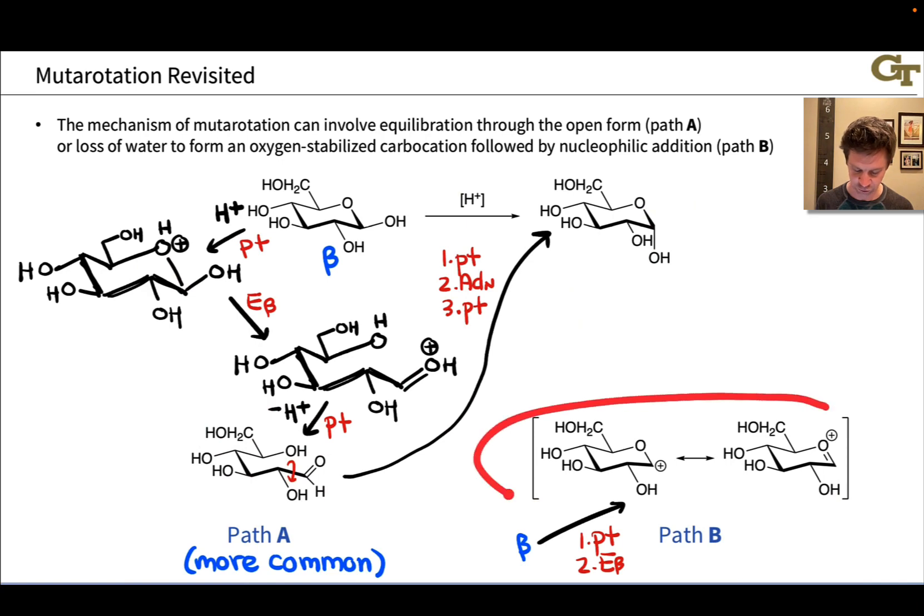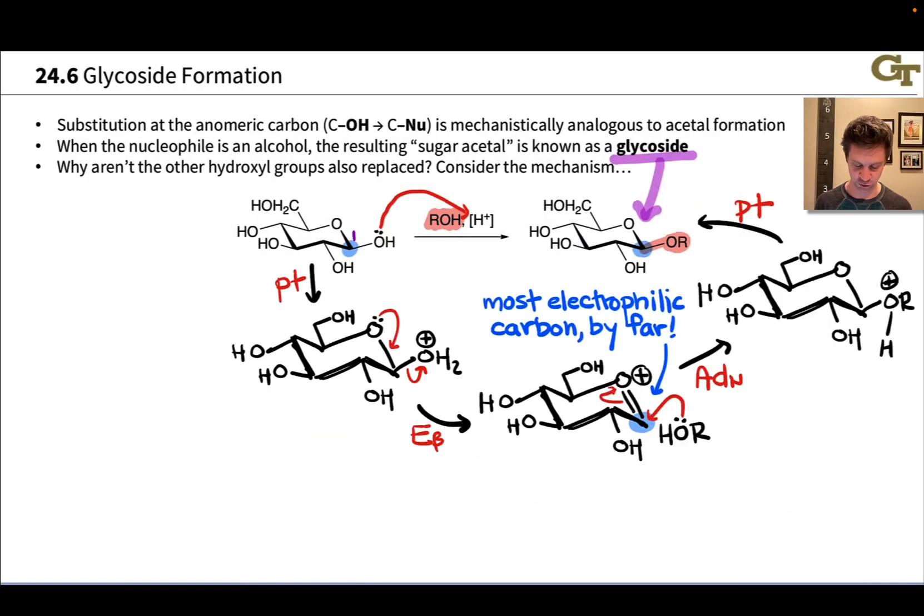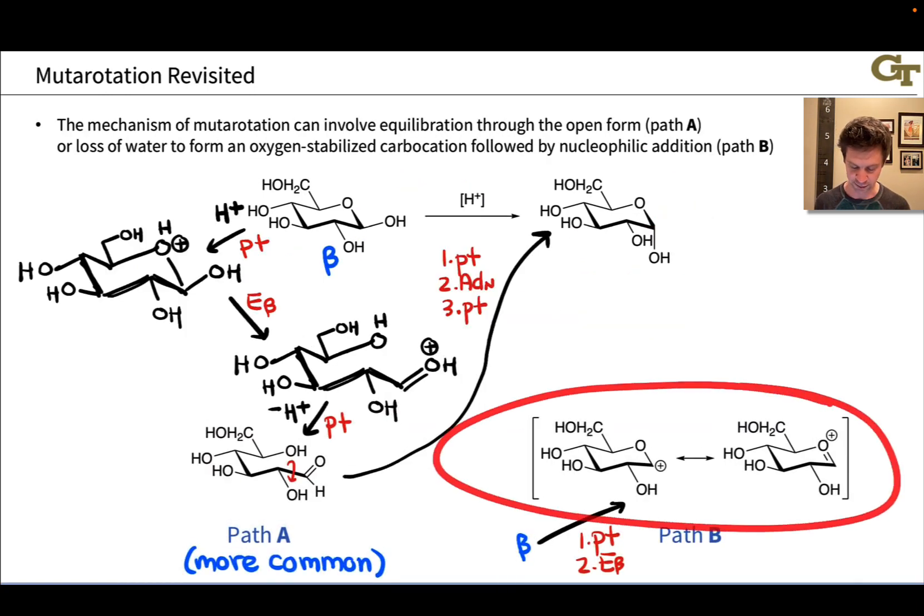We get this oxygen stabilized carbocation, which is the exact same cation that we generated in the glycoside formation mechanism back here. It actually has a special name, you'll hear it referred to as an oxocarbenium ion. It's a carbocation or carbenium ion stabilized by oxygen, so oxocarbenium, and that's what's going on here. And on this slide, we actually see both resonance forms of the oxocarbenium showing the delocalization of charge at carbon and oxygen.